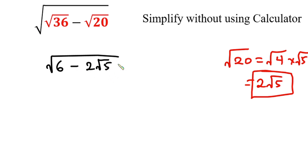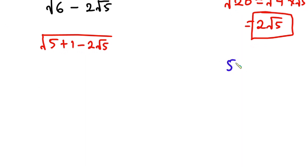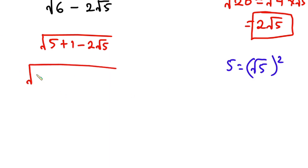Now remember we are simplifying without using any calculator, so what we're going to do is manipulate what is under the square root. We just keep the square root — 6 is the same as 5 plus 1, then we have minus 2 root 5. Now 5 is the same as root 5 squared. So in place of 5 over here we're going to put root 5 squared. So we have square root of root 5 squared plus 1 minus 2 root 5.